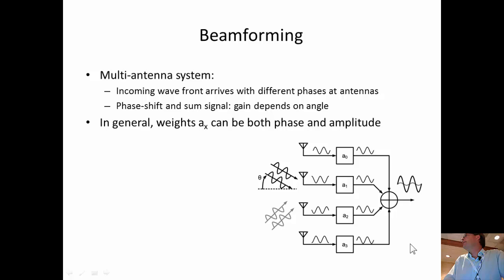So what happens is, like I said, the incoming waves arrive at different phases. And basically, the weights can be a phase change or an amplitude change. And especially if you want to make nulls in a transfer, if you want to reject a certain interferer, then you have to play also with gains.